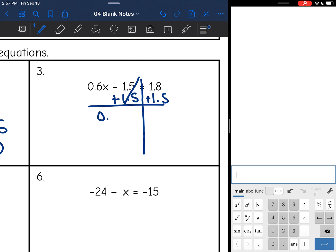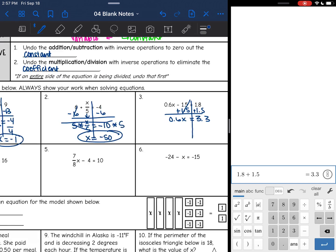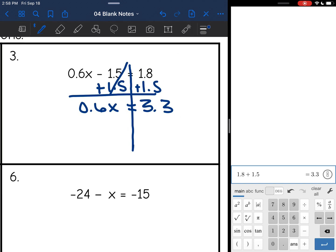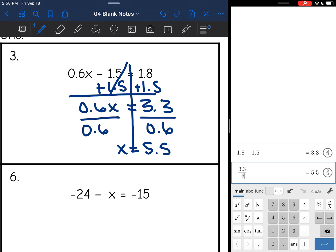And I get 0.6x equals 1.8 plus 1.5, which is 3.3. And the last step is to divide by 0.6. So x is 3.3 divided by 0.6, and I get 5.5.